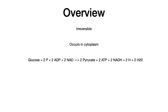Glycolysis is an irreversible biochemical reaction that occurs in the cytoplasm. The net equation for glycolysis is that you start with glucose and turn it into pyruvate, where it can downstream take multiple pathways. Usually this goes into the citric acid cycle. The net equation: you start with glucose, add two phosphates, two ADPs, and two NADs, and what you get out is two pyruvates, two ATPs, two NADH, two hydrogens, and two waters.